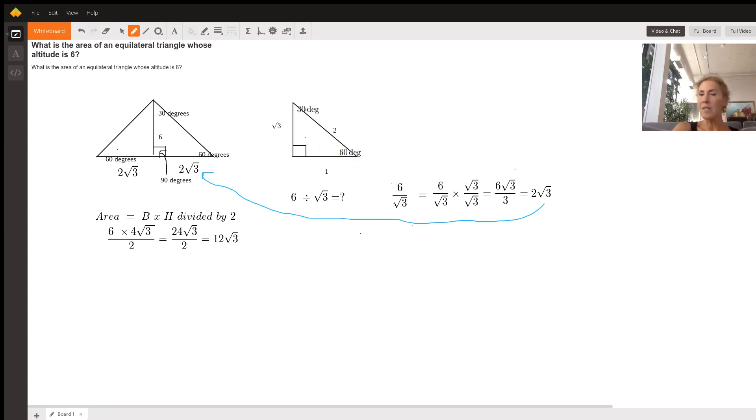The side length across from a 30 degree angle, if it's one, then the side length across from the 90 degree angle is double that, so it would be two. And then the side length across from the 60 degree angle is whatever this length is, the one, times radical three. So this is our relationship. However, we don't have radical three as our altitude, we just have six.